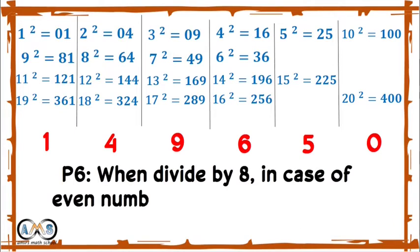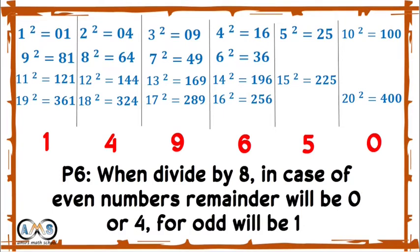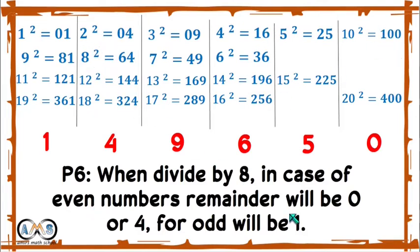When we divide any perfect square number by 8: in the case of an even perfect square number, the remainder will be 0 or 4; and in the case of an odd perfect square number, the remainder will be 1. For example, 64 divided by 8 gives remainder 0; 196 divided by 8 gives remainder 4; and 49 divided by 8 gives remainder 1.